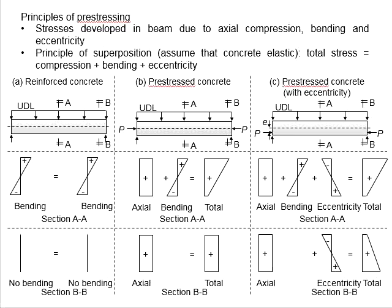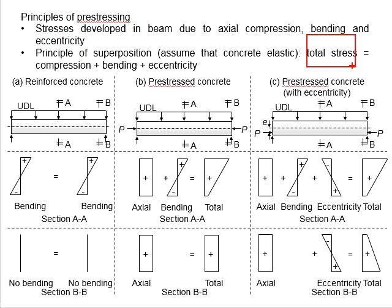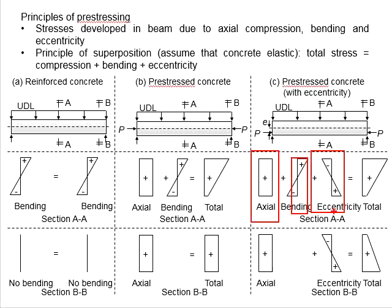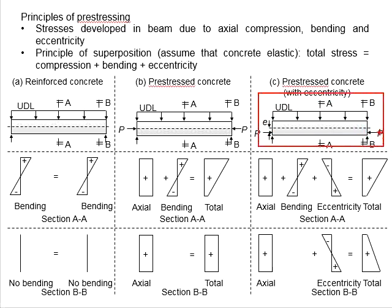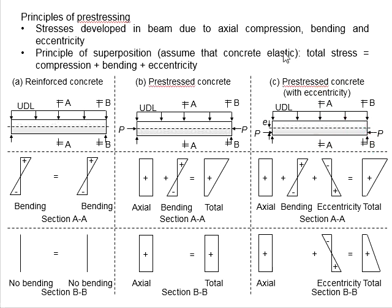In the previous videos, we have discussed the principle of superposition, where the total stress developed within a member is the summation of axial compression, bending, and eccentricity depending on their existence at specific locations of the member. For a typical prestressed concrete beam subjected to symmetrical load, there will be at least two critical locations to be analyzed: one at the mid-span and another at the support.